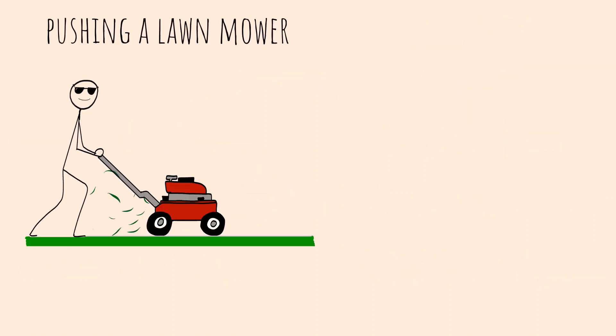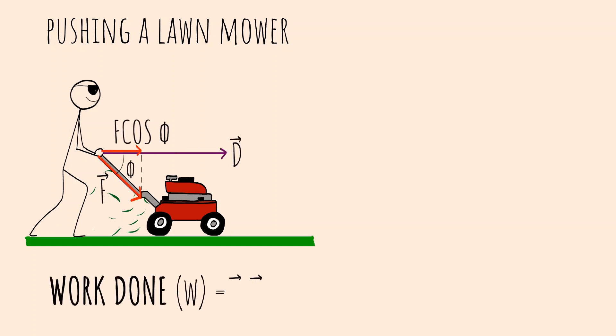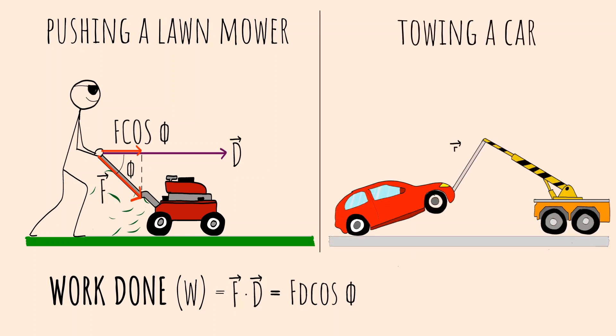You can see dot product in action whenever you push a lawnmower. The work done by the force on the lawnmower is given as the dot product of force and displacement. You can also see this happening whenever a car is towed by a tow truck. Work done is an important quantity as it relates to the crucial concepts like energy and power.